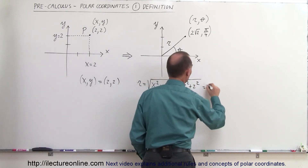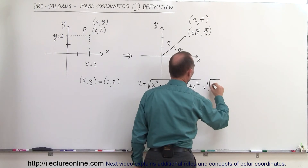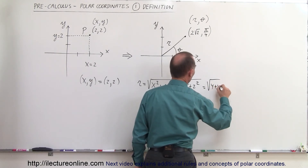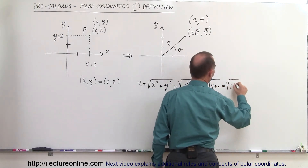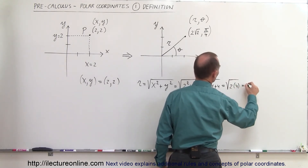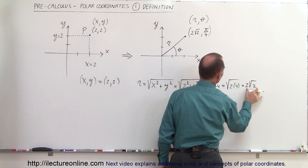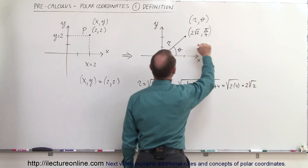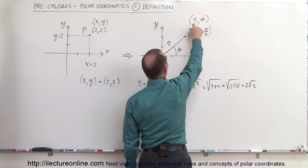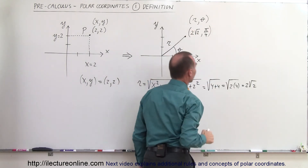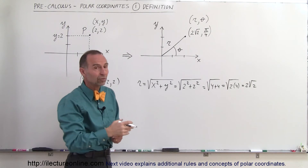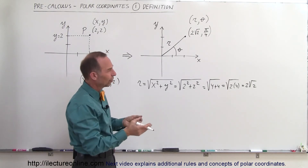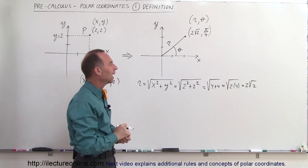So r equals the square root of 4 plus 4, which equals the square root of 2 times 4, which equals 2 times the square root of 2. And notice that was the r coordinate in the polar coordinate system — a distance of 2 times the square root of 2, which is about 2.8.